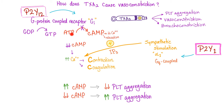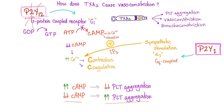GI-coupled prevents the conversion of ATP into cyclic AMP — remember the enzyme adenylate cyclase. When you have low cyclic AMP, you have more calcium. More calcium means more coagulation. When cyclic AMP is high, platelet aggregation is low; when cyclic AMP is low, platelet aggregation is high. The P2Y12 inhibitor medications inhibit the P2Y12 GI-coupled receptor, so there is no decrease in cyclic AMP and no increase in platelet aggregation.